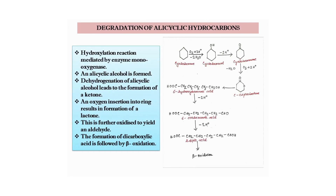For the degradation of alicyclic hydrocarbons, using cyclohexane as an example: a hydroxylation reaction mediated by monooxygenase converts cyclohexane into an alicyclic alcohol — cyclohexanol. Dehydrogenation of cyclohexanol leads to formation of a ketone. ε-caprolactone is further oxygenated into 6-hydroxyhexanoic acid. A stepwise dehydrogenation then leads to 6-oxohexanoic acid, and finally the fatty acid adipic acid, which is subject to beta-oxidation.